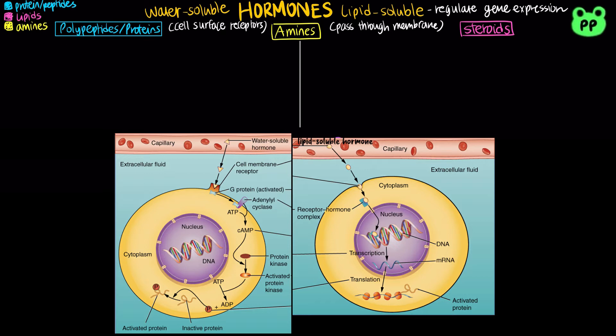There are three major classes of molecules that function as hormones. Polypeptides and proteins are shown in blue. Amines derived from amino acids are shown in yellow. And steroid hormones derived from cholesterol are shown in pink.